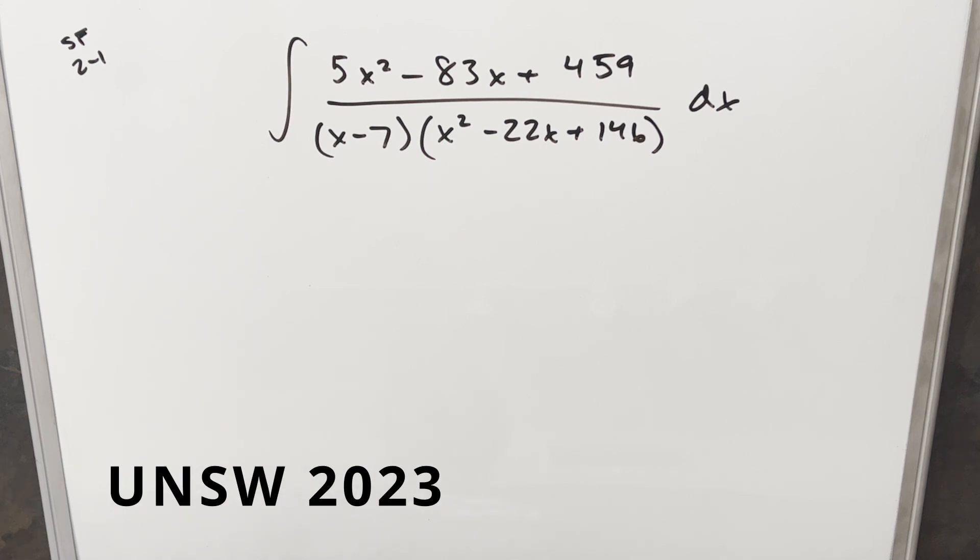Okay, we have here to take another integral from the UNSW integration B 2023. This was semifinals, round two, problem one. We have the integral of 5x squared minus 83x plus 459 over x minus 7 times x squared minus 22x plus 146 dx.